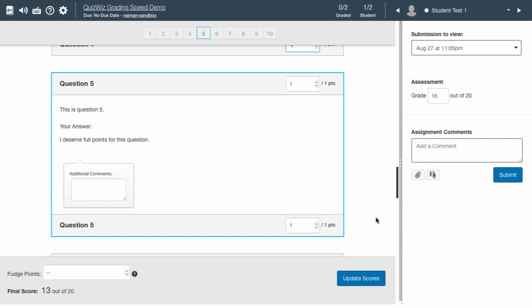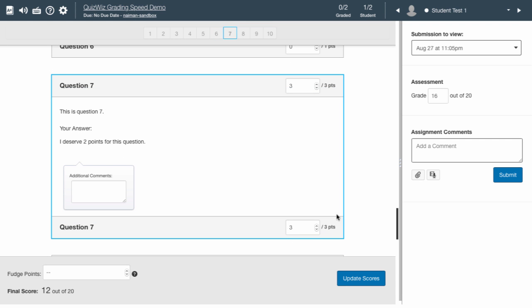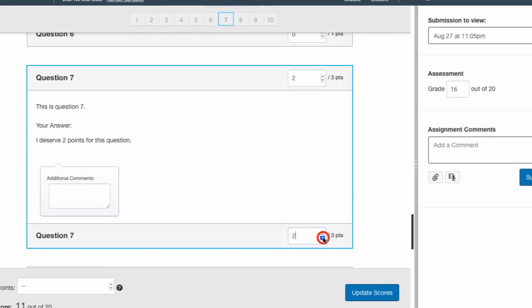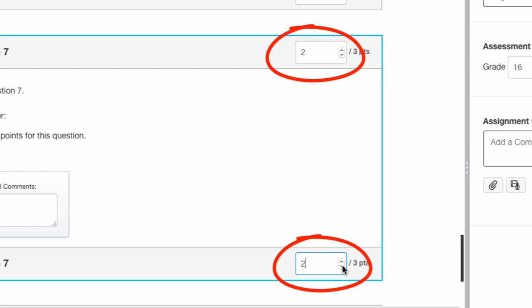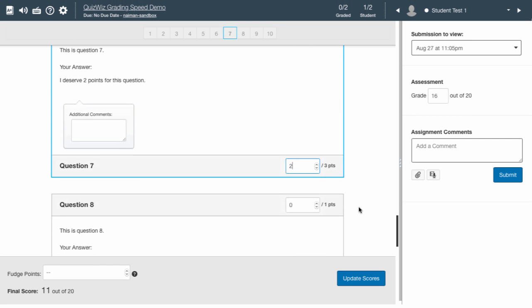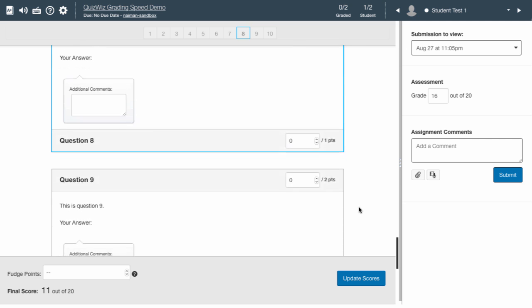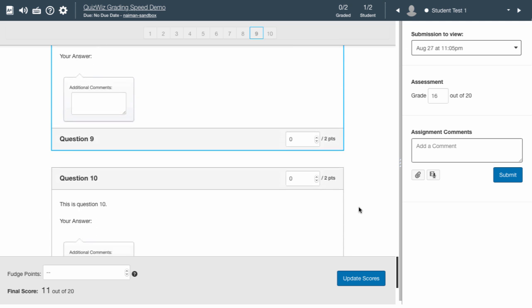No clicks are needed for this one point answer. Only one click is needed for this incorrect answer. This answer deserves two out of three points. Note that the point boxes remain synchronized at all times. The final three questions were not attempted. QuizWiz has already assigned them scores of zero, so there is no need to make any further adjustments.